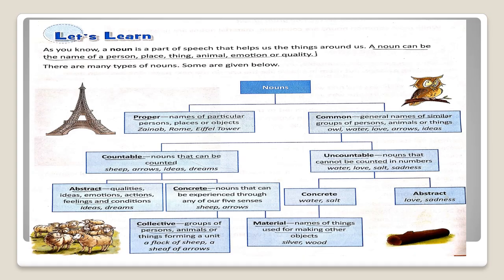As you know dear children, a noun is a part of speech that helps tie things around us. A noun can be the name of a person, place, thing, animal, emotion or quality. There are many types of nouns.